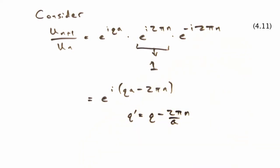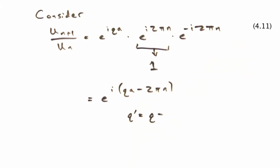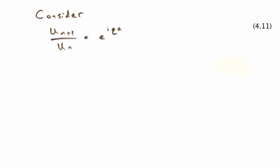Now let's define a new wave vector q prime that equals q minus 2 pi n over a. Now, 2 pi over a is the magnitude of our g vector in 1D, so this q prime is just our original q minus an integer value of our reciprocal lattice. If we plug that back into this term here, we have the same form as the original ratio. So this new q prime is equivalent to a q vector already inside the first Brillouin zone.